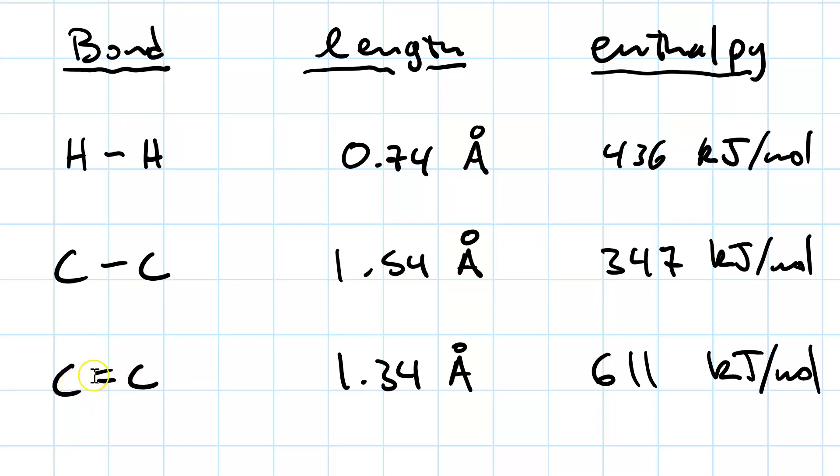Now consider a CC double bond. This double dash means two shared pairs of electrons. Now the length is shorter, at 1.34 angstroms. And the bond is stronger, at 611 kJ per mole. It's not twice as strong, though. That's because a single bond is a sigma bond. A double bond is a sigma bond and a pi bond. And a sigma bond is stronger than a pi bond.